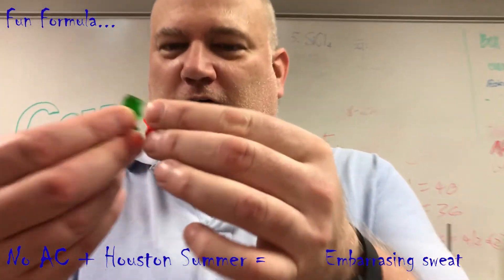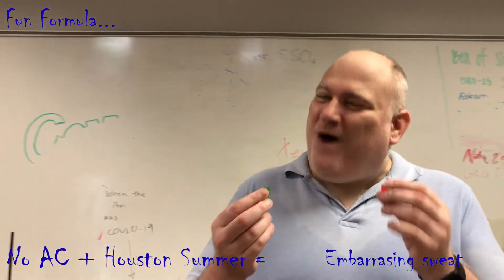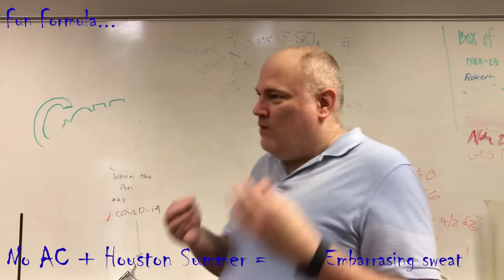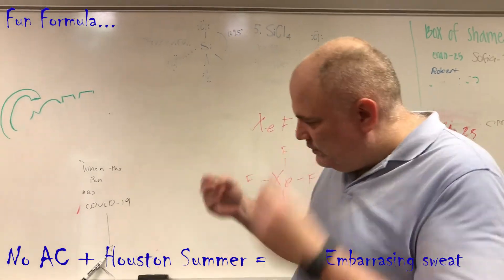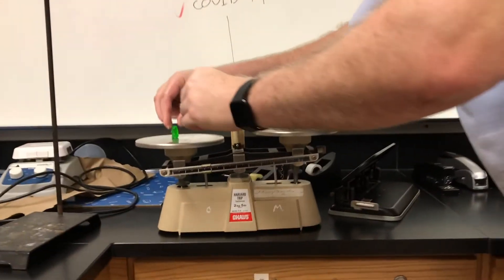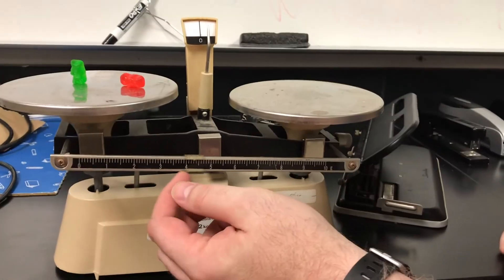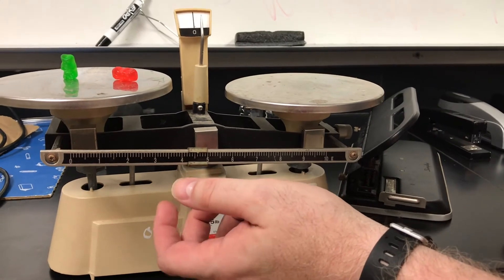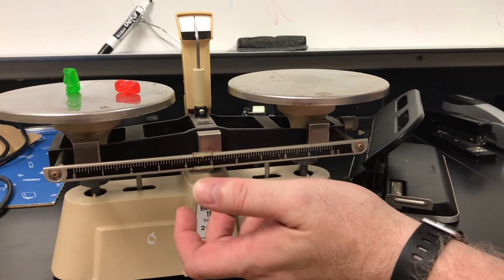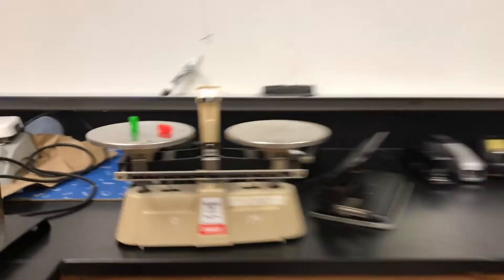All right, we have Mr. and Mrs. Gummy to help us out to understand why we use significant figures and why does it matter what tool we're using. So we're going to put them on Mr. Janky Balance over here. And when we put it on here and we measure the mass, oh he fell over, that's fine. We end up with a mass of about 4.6 maybe or so, 4.6.